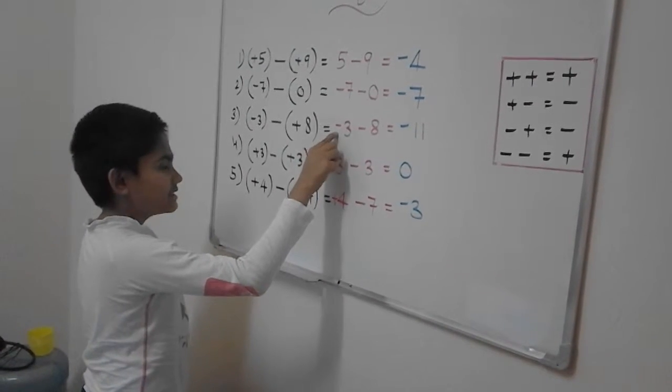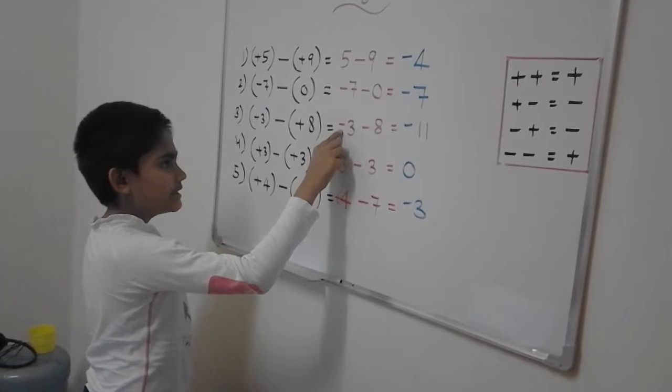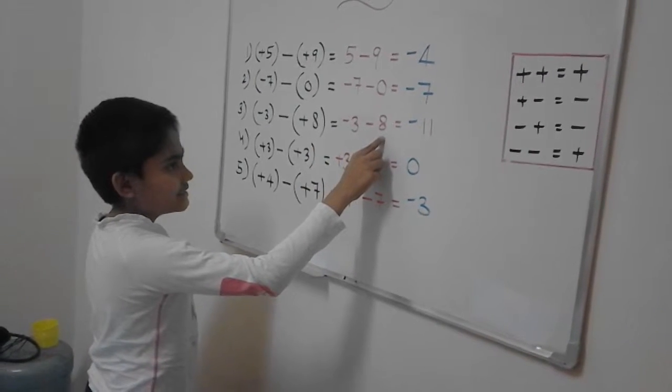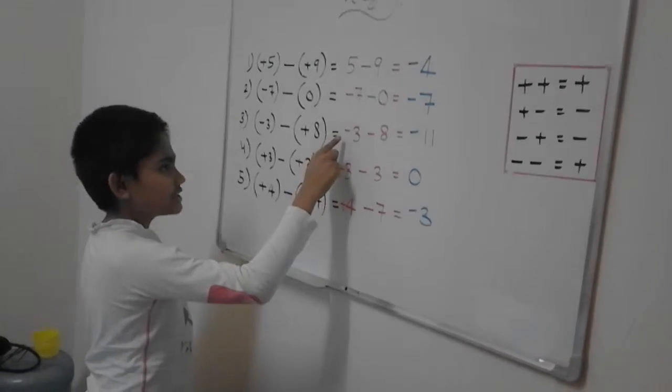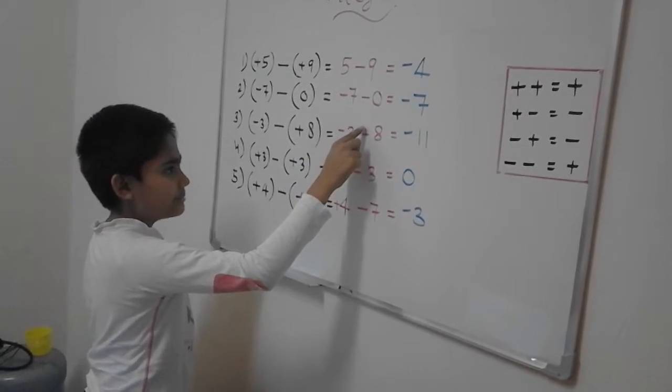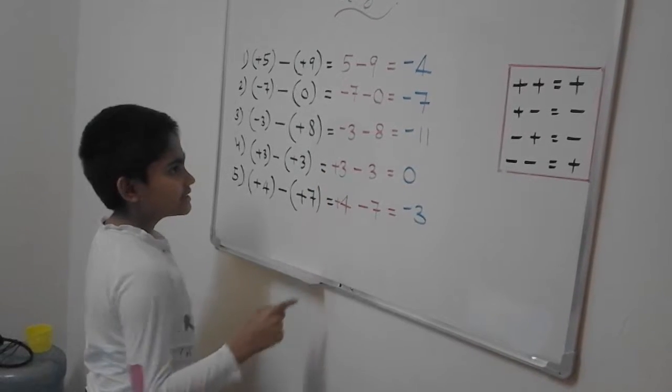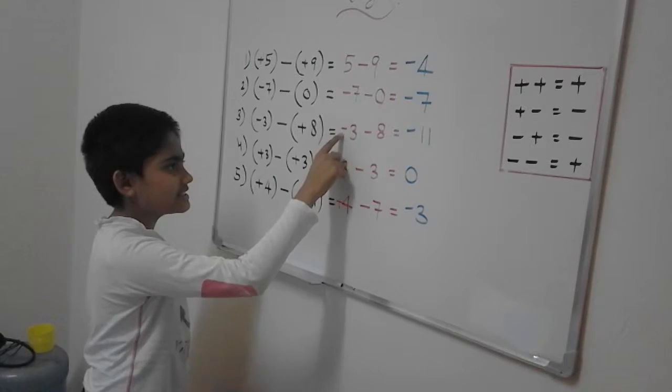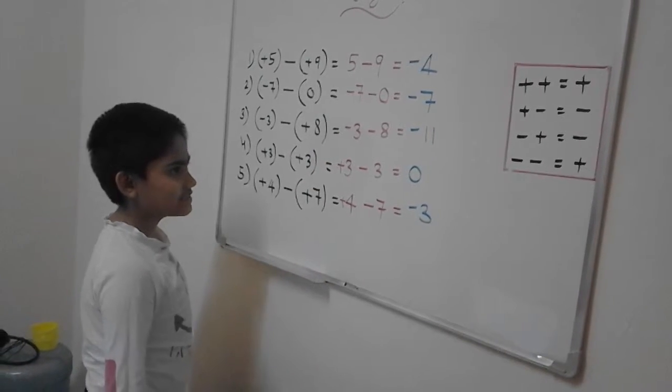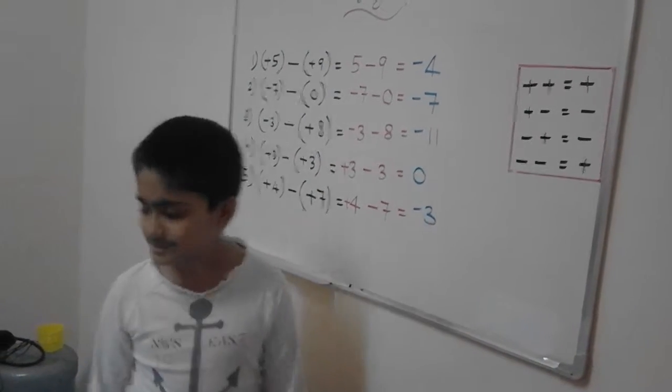So then the question again becomes minus 3 minus 8. After that, you should have to keep this minus for the answer and make this minus as plus. 3 plus 8 is equal to 11. So we will use this negative sign in 11. So it becomes negative 11.